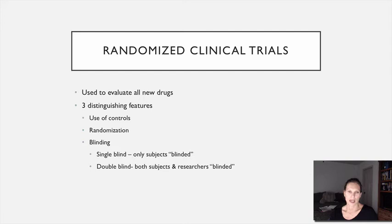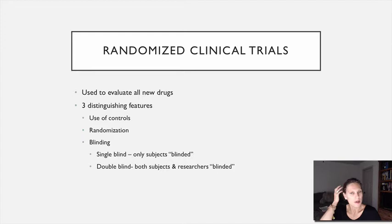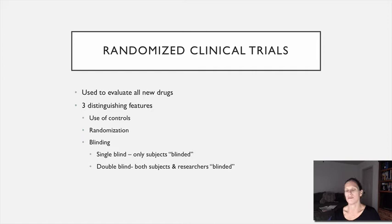In a single-blind study, the subjects don't know if they're getting the actual drug or a placebo. In a double-blind study, which is the gold standard, neither the people administering the drug nor the people receiving it know who's getting what — so both researchers and subjects are blinded. That makes it more objective theoretically, since nobody knows what's going on.